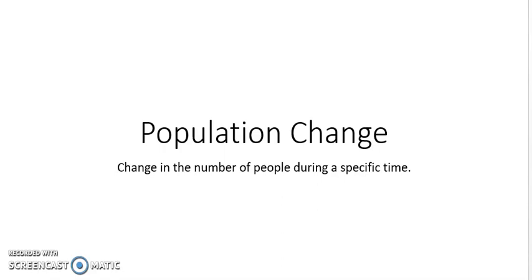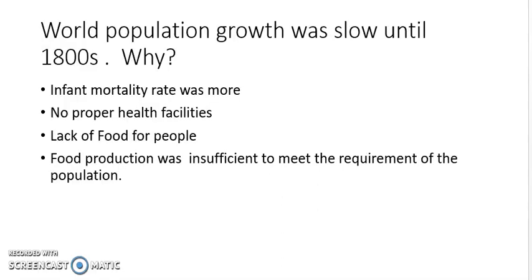Let us discuss what are the reasons for population change. Till 1800, world population growth was slow. The first reason is that infant mortality rate was more. Infant mortality rate means the number of newborn babies or infants that died after birth.